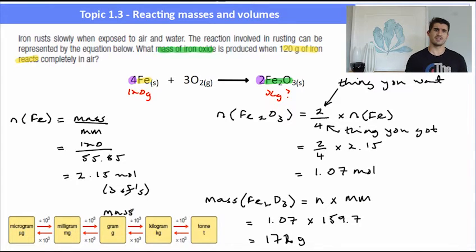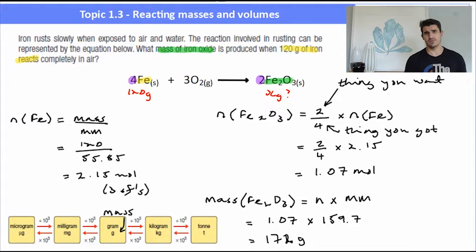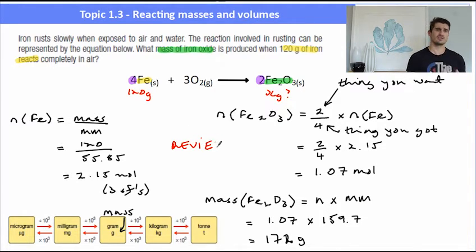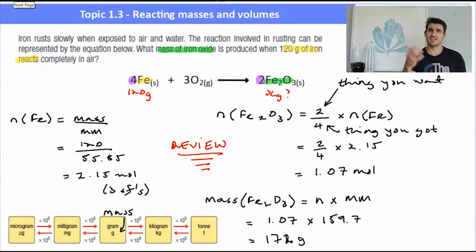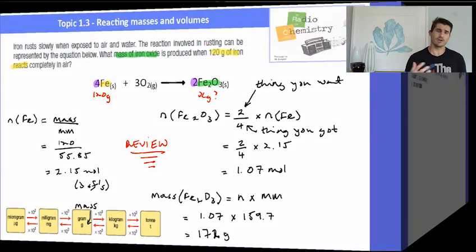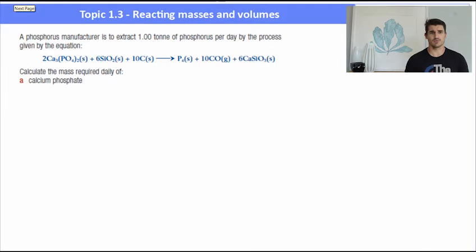Just make sure that in a question, they could give you masses in different units. The SI unit for mass in chemistry is grams, so we need to make sure we convert to grams before using the formula. To quickly review: find the number of moles of the thing that you've been given, use the ratio — thing that you want over the thing that you've got — to find the number of moles of the unknown.